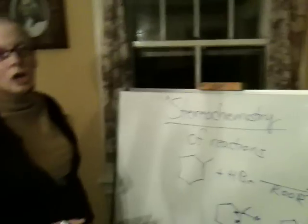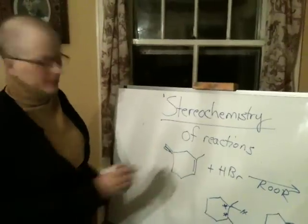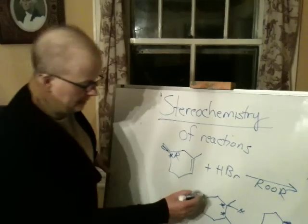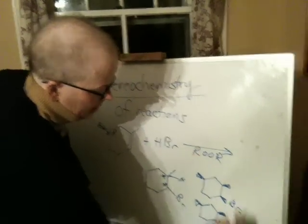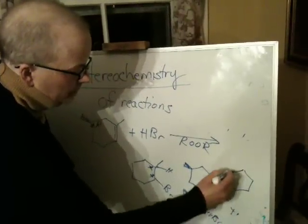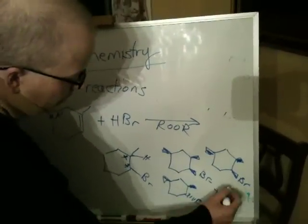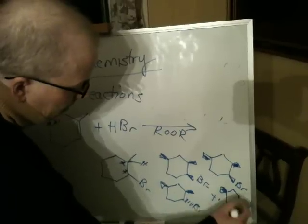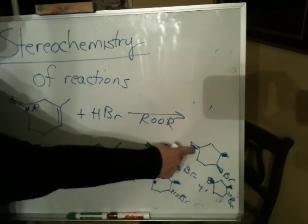Now, if there were a preexisting asymmetric carbon in the molecule — so for example, if there was already an asymmetric carbon here, this is an R center — that center would still exist in all your products. So these would no longer be MIs. These would be diastereomers, because the preexisting center does not change as a result of the chemistry. So you would have to actually draw them all out. If there's a preexisting center, you have to keep that in there and you can't write MI, because if you draw MI of these, you're going to invert that center.